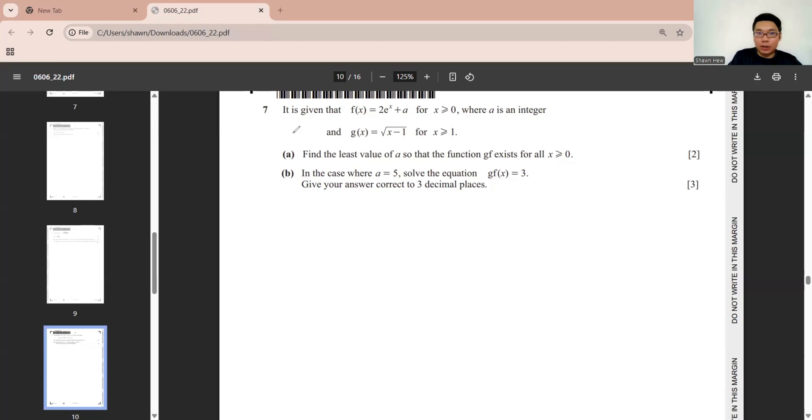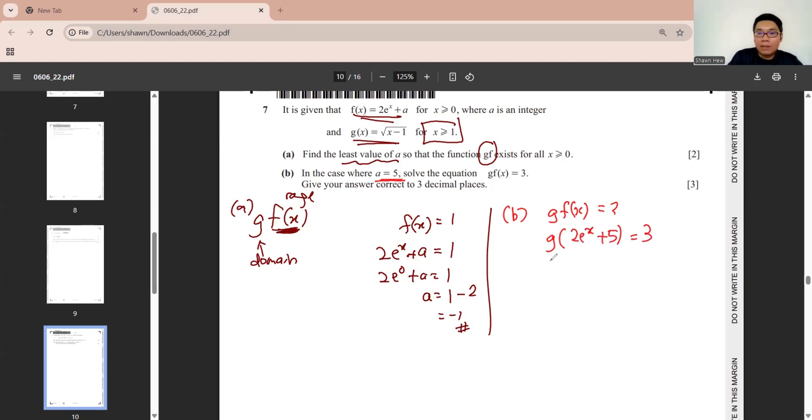Question 7 under function. They give you this equation. And then give you g. They ask you to find the least value of a. So that the function gf exists. For gf exists. The range of f. It must be able to fit into the domain of g. So the thing that we know is domain of g is x more than 1. So which means the range of f must be equals to 1. And then they already say x is more than or equal to 0. So we can replace my x as 0. e power 0 is 1. So we can confirm a is minus 1. Then for part b. In the case of a equals to 5. Solve the equation of gf x equals to 3. f is this. Then we substitute in. Remove square root is square. x equals to ln 5 over 2, which is 0.916.